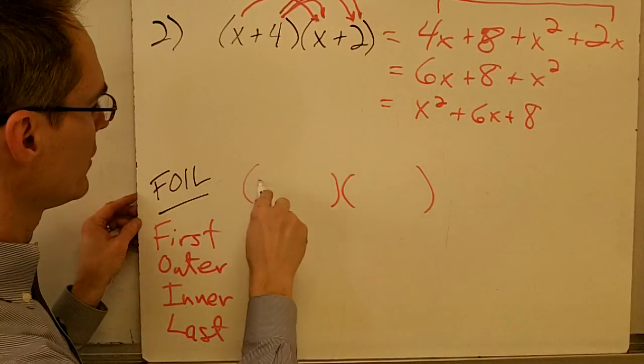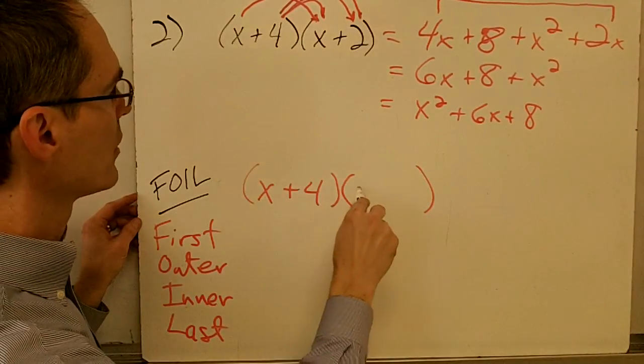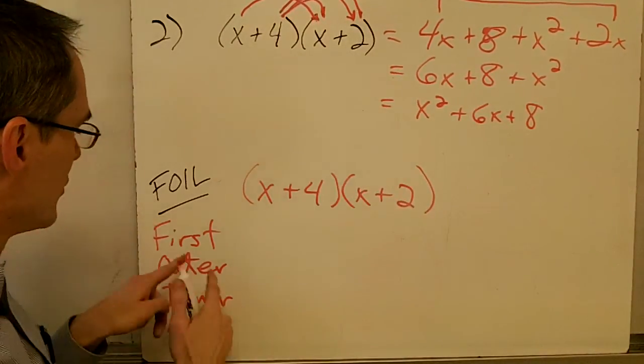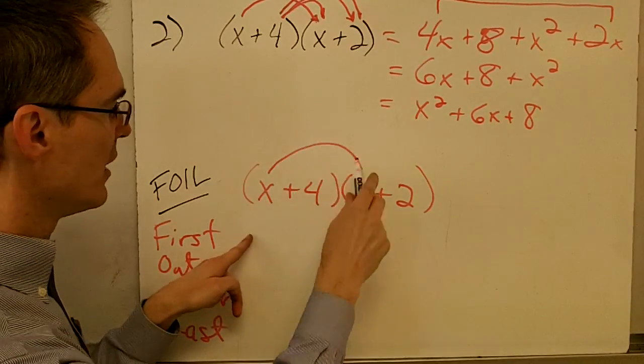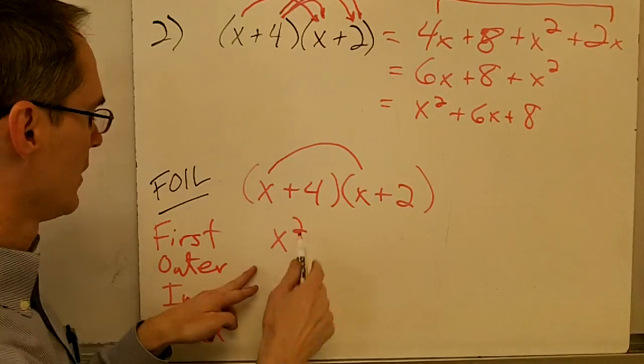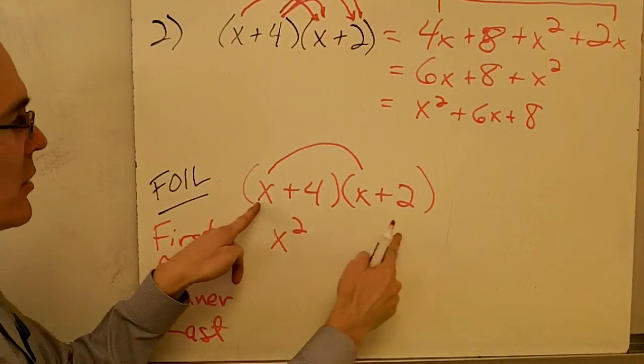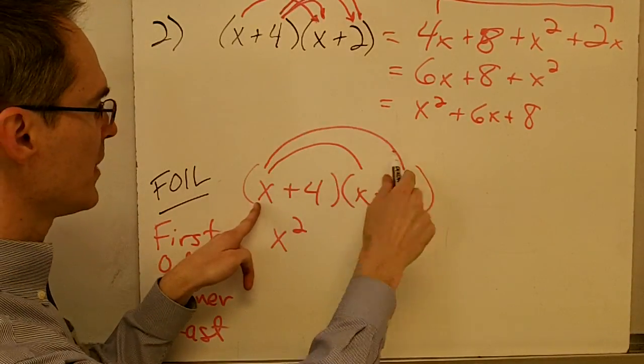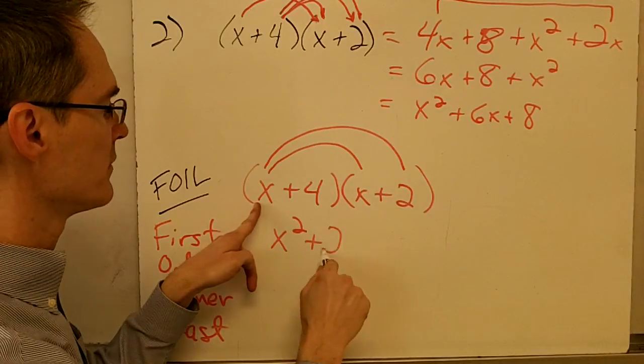So if I'm going to do this using FOIL, x plus 4 times x plus 2, well, first I would multiply my two first terms. That's my first term, so x times x is x squared. Then I would do my two outer terms. That's x and positive 2, so that's going to give me positive 2x.